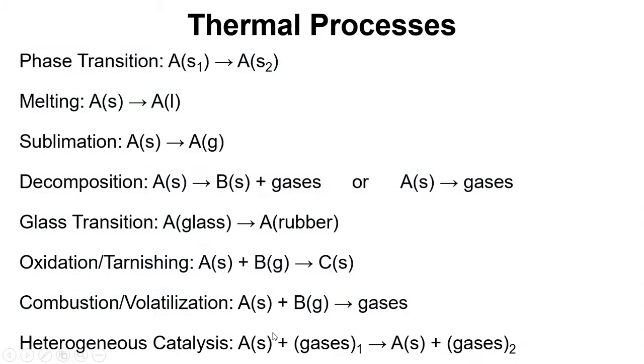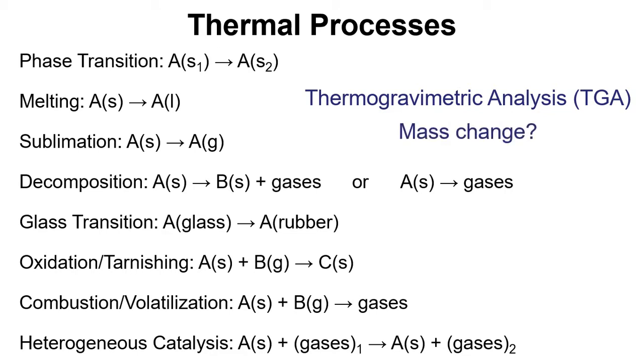So if we go back to our thermal processes for a moment. If we think about thermogravimetric analysis, this monitors a change in mass. So we need to consider, do these processes undergo a mass change, and therefore are they suitable for being studied with this technique? So if we think about sublimation, yep, that will undergo a mass change, so we could use TGA. As would decomposition, oxidation and tarnishing, combustion and volatilization.